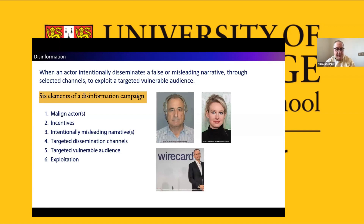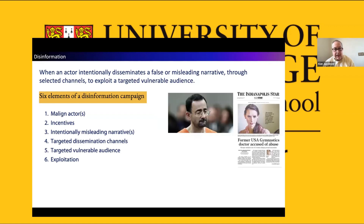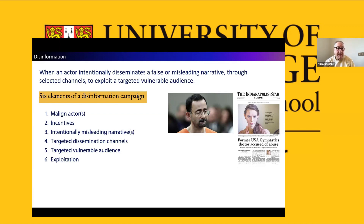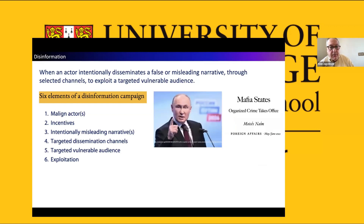Examples in my field are fraud: Bernie Madoff, Theranos, Wirecard — all running this disinformation structure. I also noticed that accounting is inherently in the disinformation space because it shares the same structure as predatory sexual offenders. One example is a doctor working with gymnasts — mostly Olympic and university athletes in the United States — who was providing false incentives to the parents, coaches, the university, and the victims about his so-called health care regime, and was able to victimize that way. This structure also runs through authoritarian enterprises, which we call mafia states.